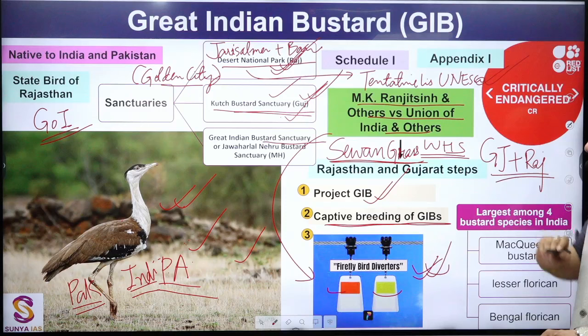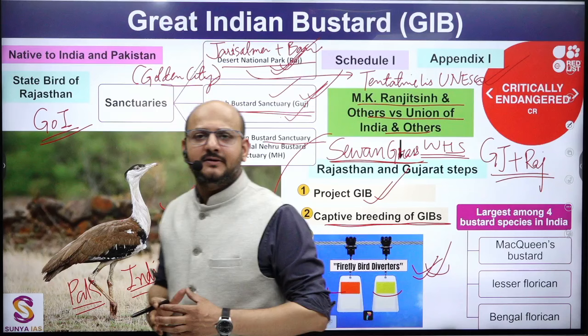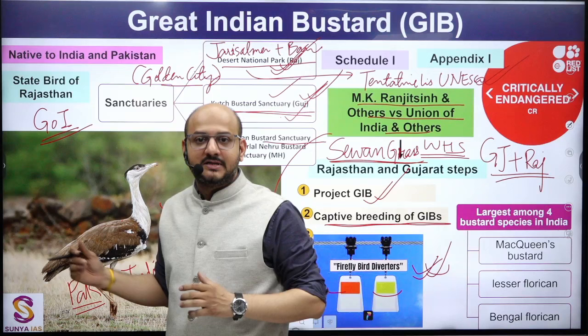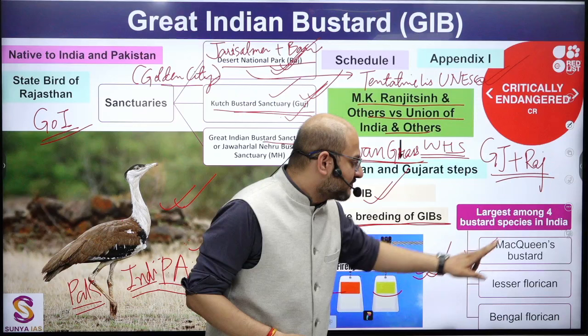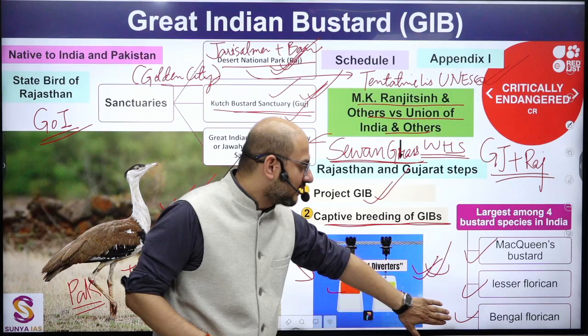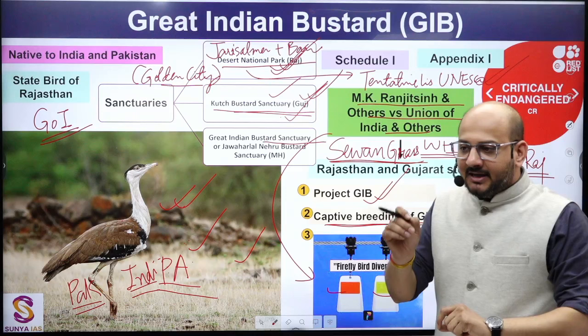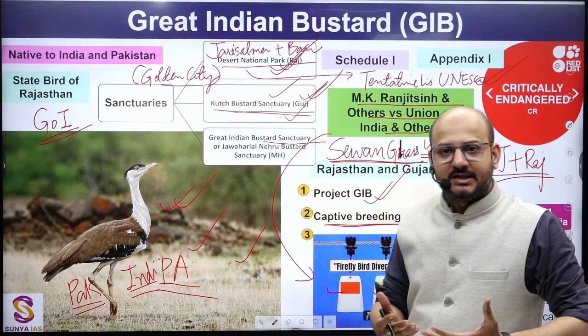Four types of bustards are found — the Great Indian Bustard is the largest of all. The other three are MacQueen's Bustard, Lesser Florican, and Bengal Florican. Critically endangered species get many questions in UPSC, therefore this species is particularly important.